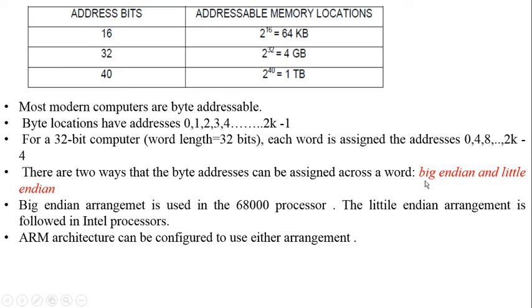There are two ways byte addresses can be assigned across a word: big endian and little endian. Big endian means assigning the lowest memory byte address to the most significant byte (MSB) of data. Little endian means assigning the lowest byte address to the least significant byte. Big endian is used in the 6800 processor; little endian is followed in Intel processors.